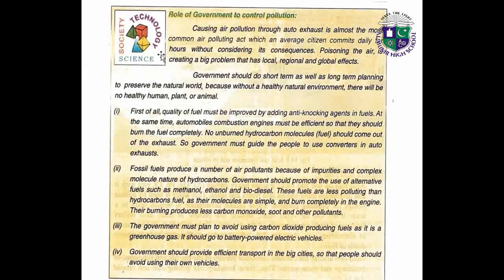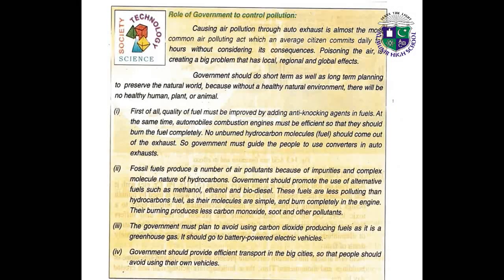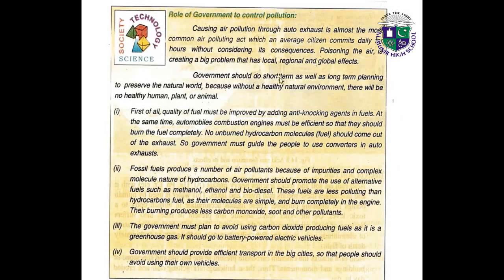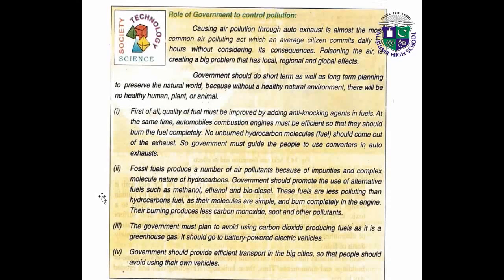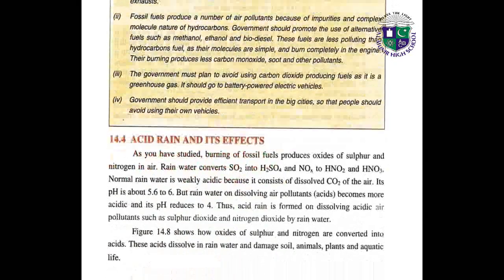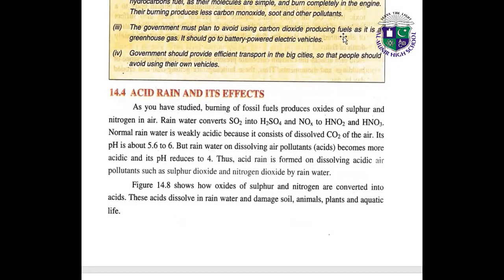What is the role of the government in reducing air pollution? Pollution through auto-exhaust is almost the most common air-polluting act which every citizen commits daily for hours without considering its consequences. Government should do short-term as well as long-term planning to preserve the natural world. Quality of fuel must be improved by adding anti-knocking agents. Fossil fuels produce a number of air pollutants because of impurities and the complex molecular nature of hydrocarbons. Government should promote the use of alternative fuels such as methanol, ethanol, and biodiesel. The government must plan to avoid using carbon dioxide-producing fuels as it is a greenhouse gas. Government should provide efficient transport in big cities so that people avoid using their own vehicles.